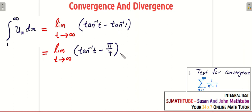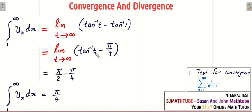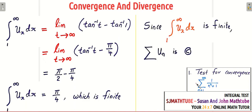Now we take the limit as T tends to infinity. tan inverse of infinity is π/2, so the result is π/2 minus π/4, which equals π/4. This is a finite number, and since the integral value is finite, our series is convergent. It's one of the easiest tests, provided you know how to integrate functions properly.